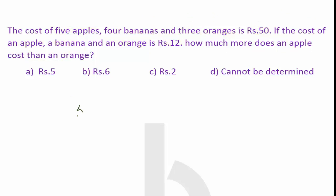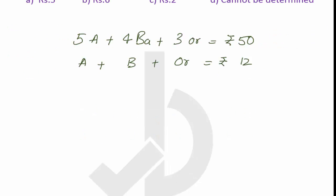Let's try to see. 5 apples plus 4 bananas and 3 oranges cost you Rs.50, and 1 apple plus 1 banana and 1 orange is costing you Rs.12. Now we have got 3 variables but only 2 equations.